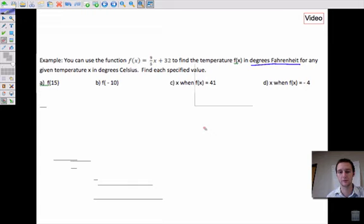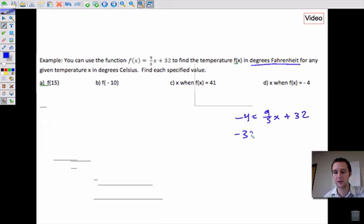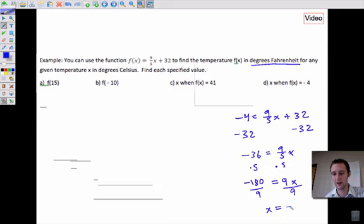And again, there's a lot of different ways to solve this. Whichever way works best for you should get 5 degrees Celsius. So 5 degrees Celsius equates to 41 degrees Fahrenheit. And the last one, a similar type of problem, find x when f(x) equals -4. So -4 equals 9 fifths x plus 32. Again, solve it. And you will get x equals -20. So when it's -4 degrees Fahrenheit, that equates to -20 Celsius.